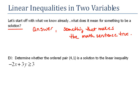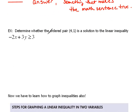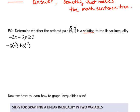Our problem here is asking us to determine whether the ordered pair (4, 1) is a solution to this linear inequality. The 4 is an x value and the 1 is a y value, so we plug them in for x and y. We get negative 2 times 4, plus 3 times 1, greater than or equal to 3.